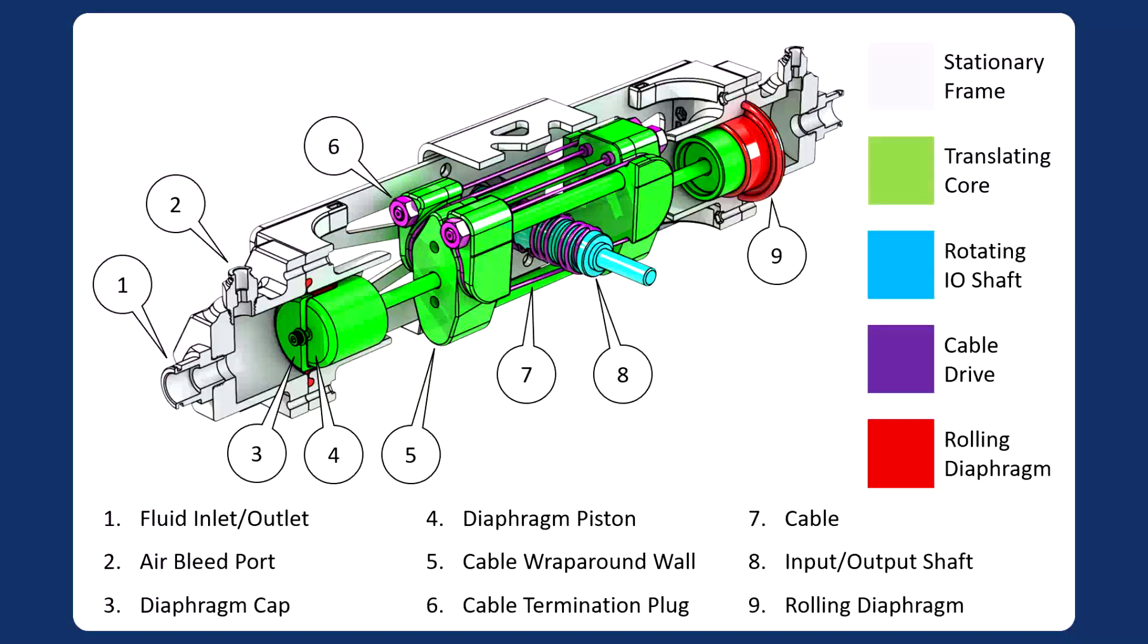Inside the stationary frame of an actuator is the translating core, shown here in green. Fluid pressure difference actuates the core through two coaxial rolling diaphragms in red, which keep it fully sealed from the fluid lines. The core drives the rotating output shaft in cyan through the cable drive in purple, while it absorbs and balances other irrelevant forces.